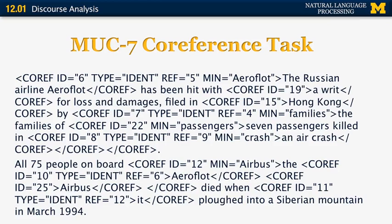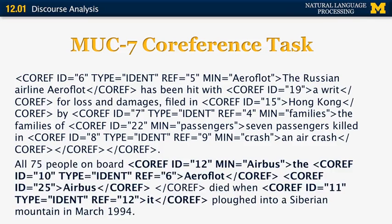In the second paragraph on the slide, some named entities have references that point back to other entities. 'All 75 people on board the Aeroflot Airbus' — Aeroflot is marked as entity ID 10 but refers back to entity number 6. The pronoun 'it' has a new ID 11 but is also identified to corefer with named entity 12. Using this kind of annotated data, we can build automatic systems that use classification to take into account every occurrence of a pronoun or anaphoric expression and use features to determine the correct antecedent.